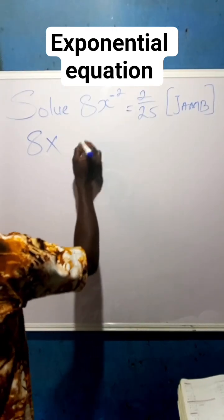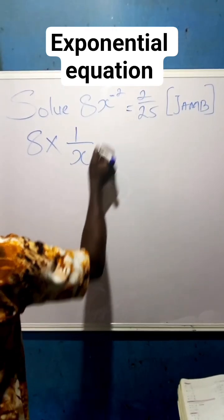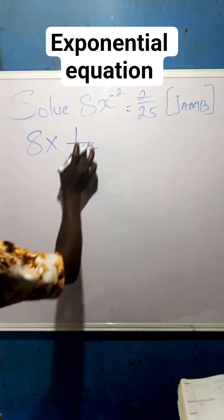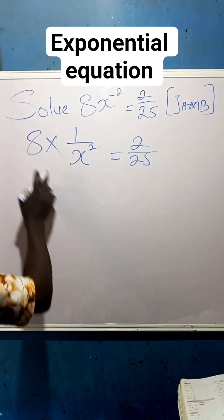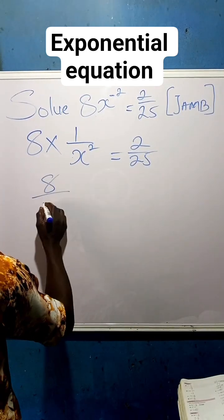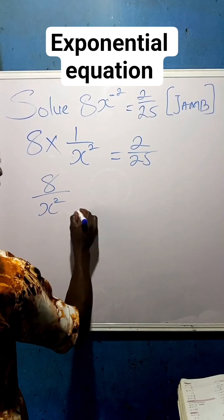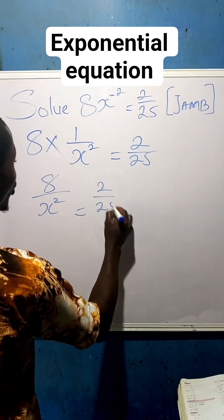So that we now have times 8 times 1 all over x, then this square will no longer be negative, so that we now have it equals to 2 all over 25. So that we have 8 times 1, we give us 8 all over, then x squared equals to 2 all over 25.